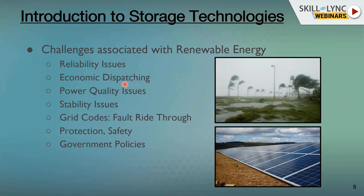Economic dispatching refers to how conventional energy sources are optimized on a 15-minute or day-ahead basis to economically generate power at lower cost. But with highly intermittent renewable energy sources connected in parallel with conventional power systems, thermal power plants will really struggle to meet expected demand while operating economically. Also, power quality is very important because renewable energy sources need to be interfaced with converters, which inject significant harmonics into the system.